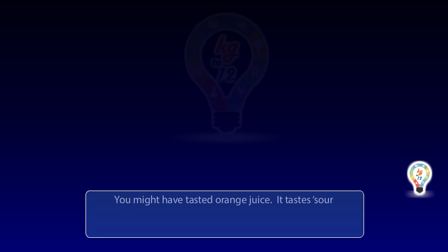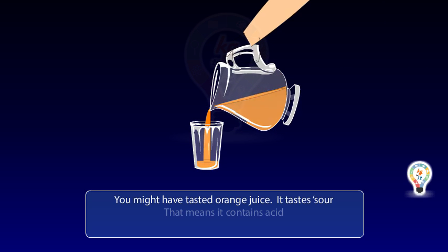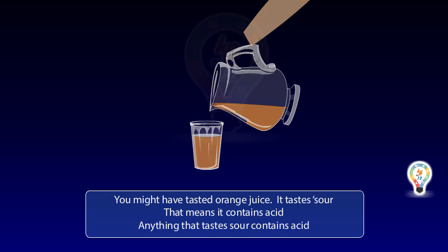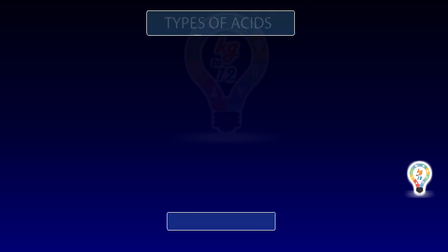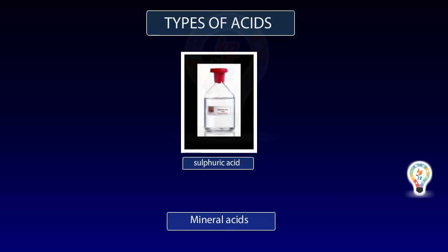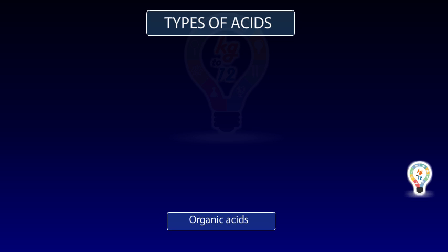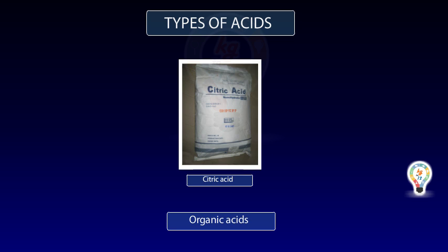Acid, bases and salts. You might have tasted orange juice — it tastes sour. That means it contains acid. Anything that tastes sour contains acid.